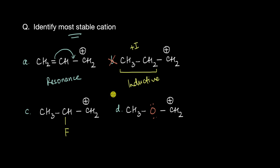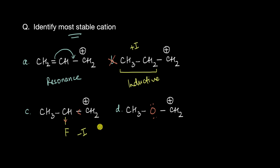Now let's look at cation C. Here we have a fluorine atom — a highly electronegative element — attached to the carbon chain. This is going to pull electrons via induction, giving a minus-I effect. Pulling electron density from an already positively charged system makes it even more unstable, so C is in fact the most unstable amongst these. C is definitely not the answer.